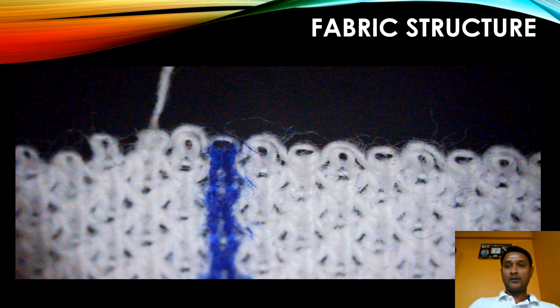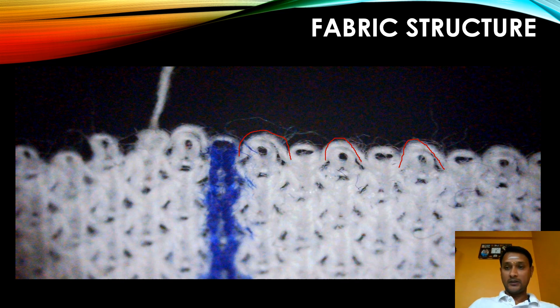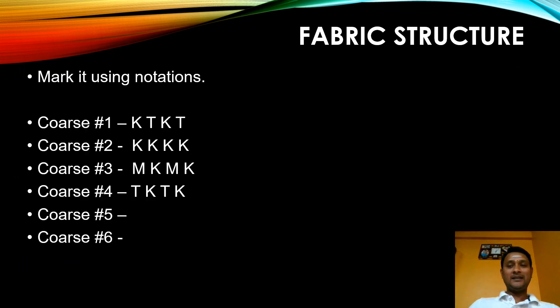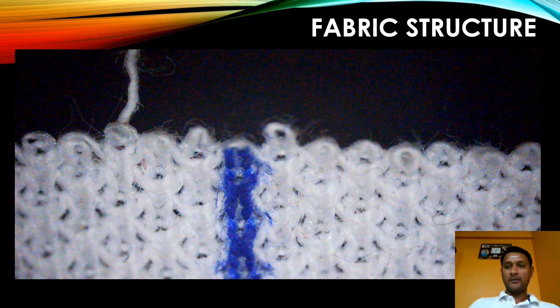Let's unravel course number four. Even before unraveling I can see half-moon structures in the odd needles — in course one I saw them in the even needles, but here they appear in the odd needles. After that vertical line, it is very clear: tuck followed by knit, tuck followed by knit — the complete loop is getting unraveled followed by the tuck stitch. So course number four is knit-tuck-knit-tuck. The first four courses are completed and we're going to unravel course number five.